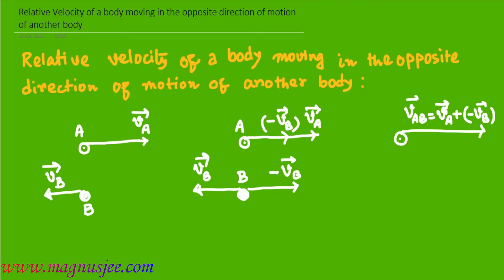This is the relative velocity of body A. But as we add minus vB with vB vector, the velocity of body B will be the zero vector, and we can assume that body B will be at rest.